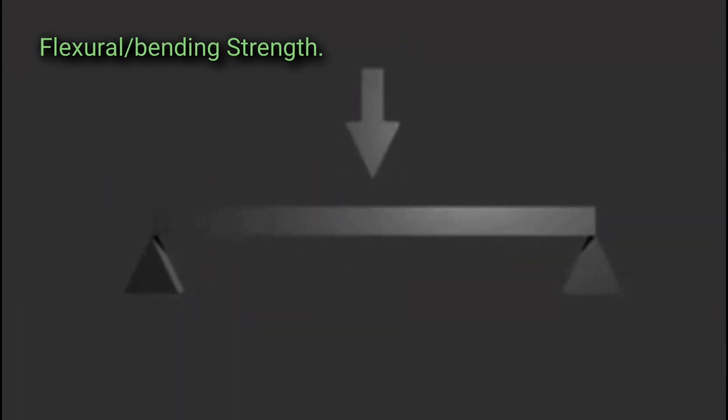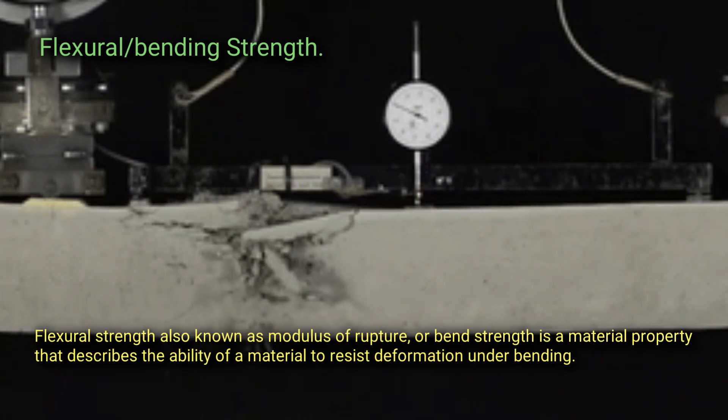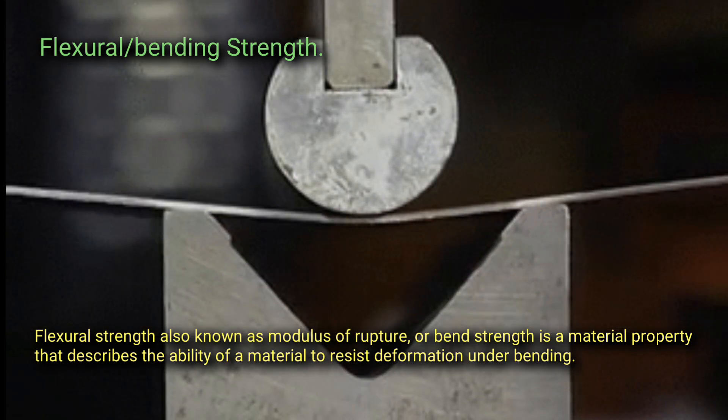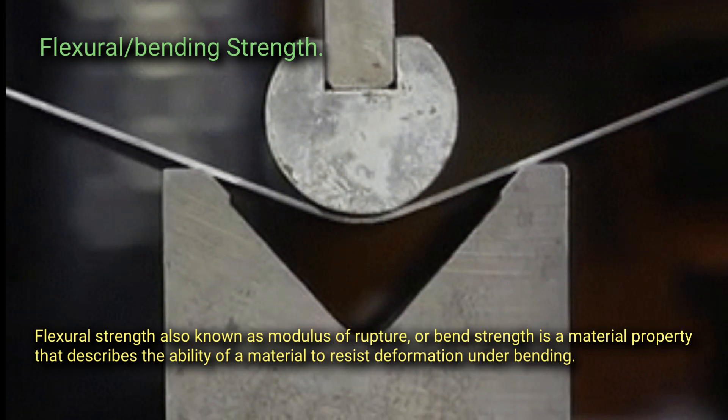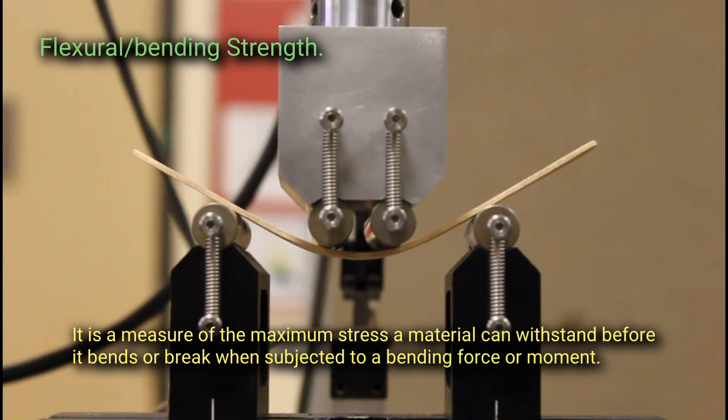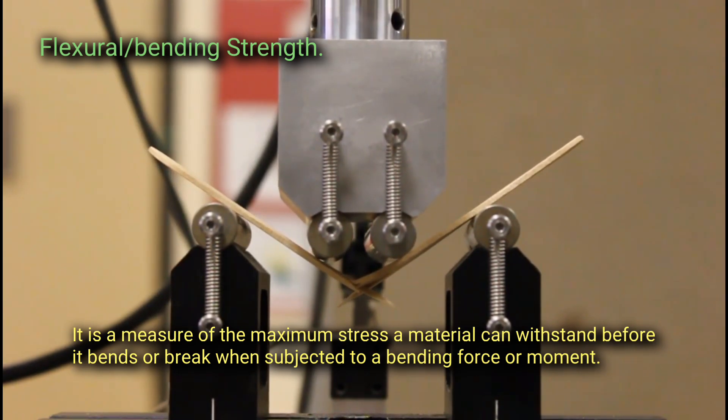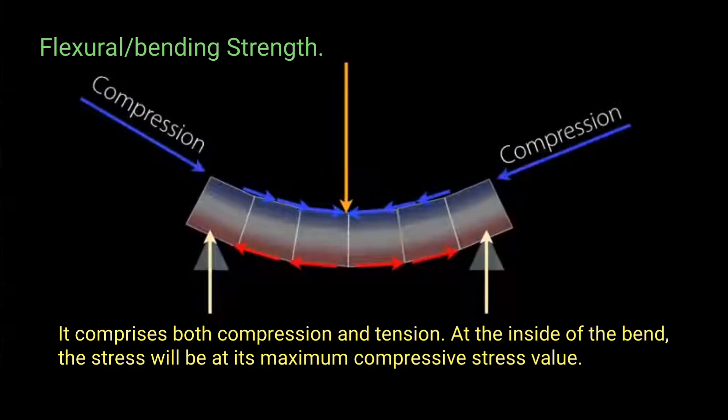Flexural or bending strength. Flexural strength, also known as modulus of rupture or bend strength, is a material property that describes the ability of a material to resist deformation under bending. It is a measure of the maximum stress a material can withstand before it bends or breaks when subjected to a bending force or moment.